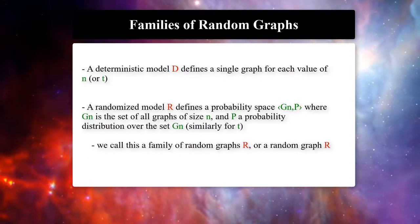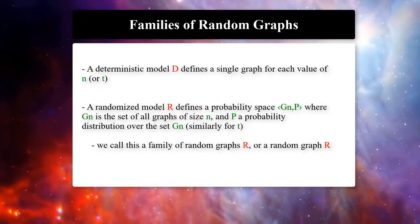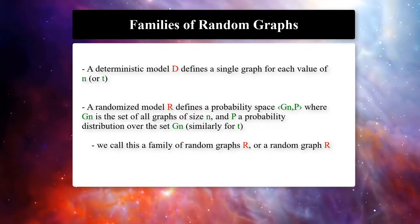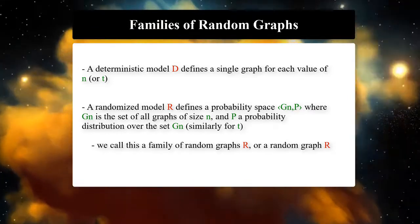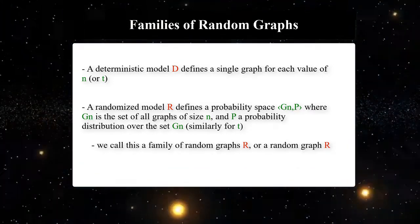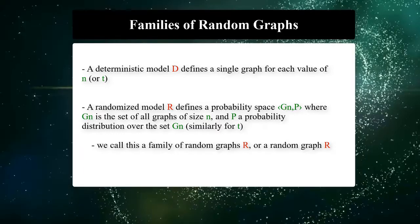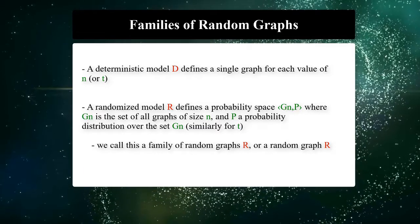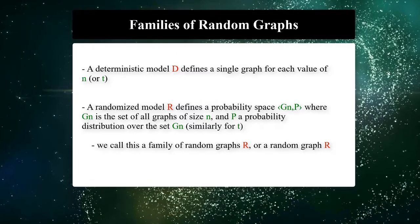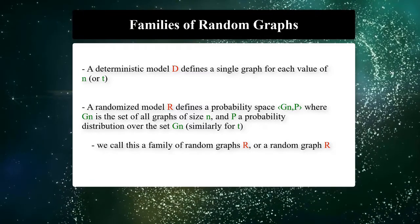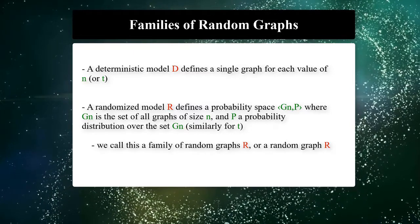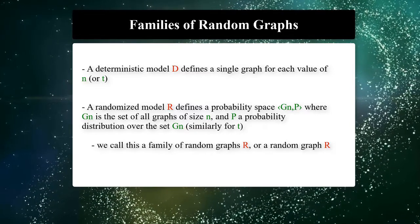If the model is deterministic, it defines a single graph for each value of n or t. In contrast, a randomized model defines a probability space G(n, p), where G(n) is the set of all graphs of size n and p is a probability distribution over the set G(n). We can do the same for each t also. We call this a family of random graphs R, or a random graph R.